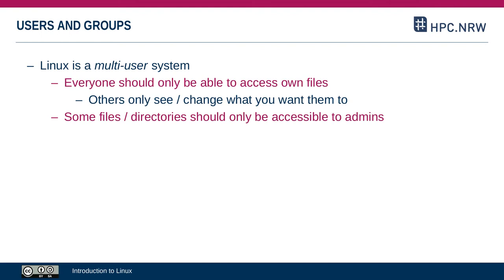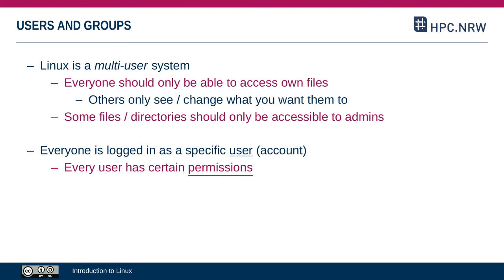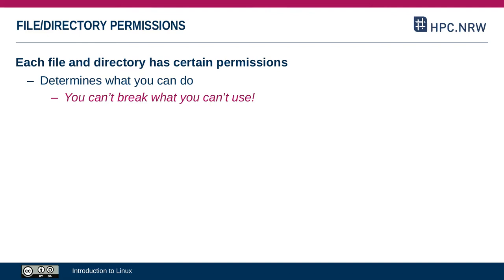Some files and directories are only accessible to admins — for example, system settings should not be modifiable by normal users. When you are logged in, you're always logged in as a specific user with your own account and you have the permissions set for you in relation to that user account. You can set permissions for files and directories that you own, but only admins can set permissions for other people. Permissions in Linux work on a per-file, per-directory, and per-user basis — the idea is that you can't break what you can't use.